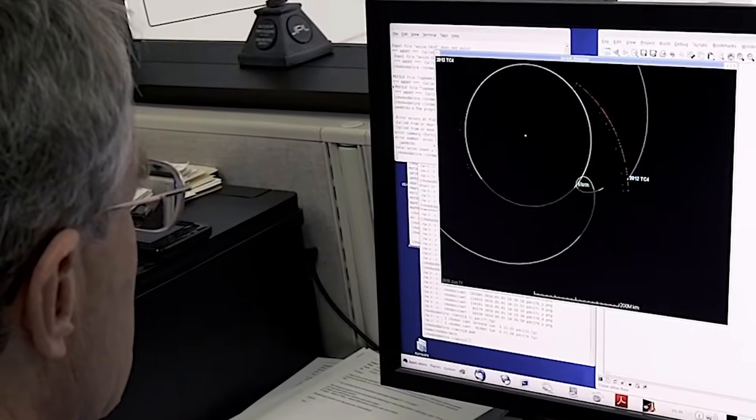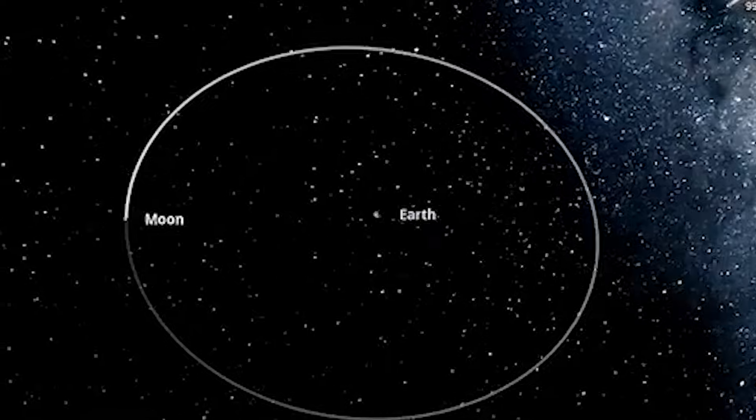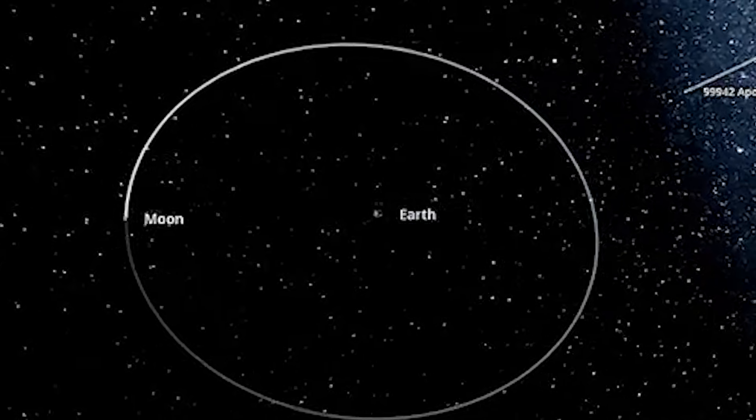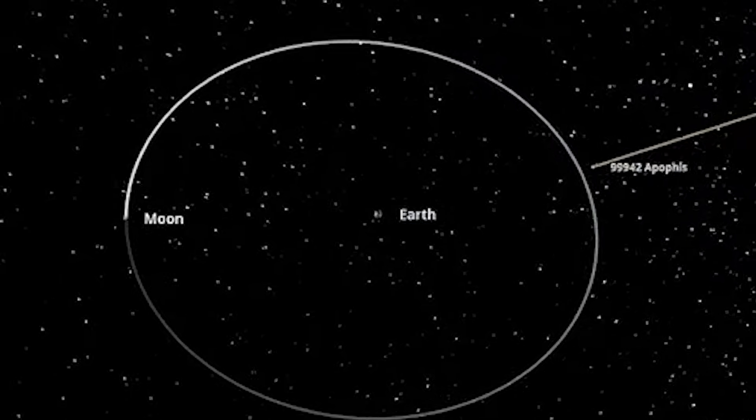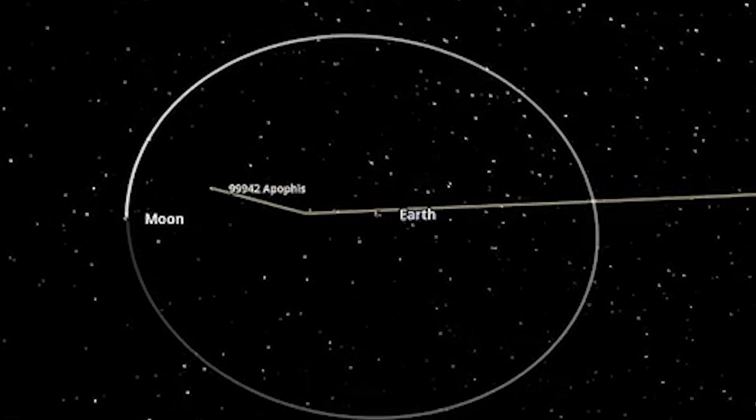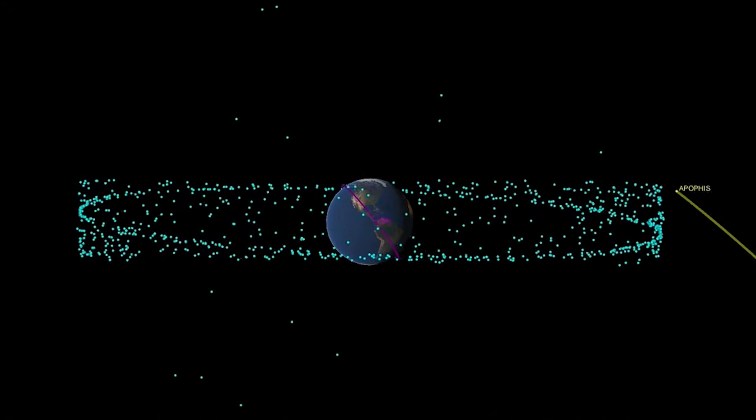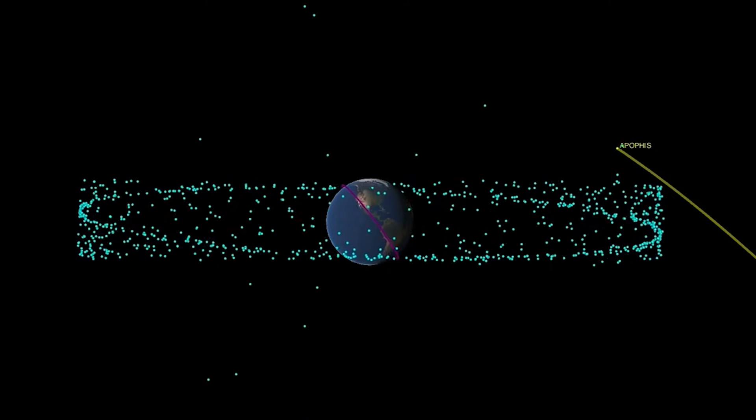You might be asking yourself: okay, but how much does this deviation really matter? Well, enough to keep NASA on high alert. Apophis's orbit is studied with almost obsessive precision. Every day, computer models are updated with new data to predict the asteroid's exact future. And as far as everything indicates, in 2029, it won't hit us. At least, probably not.